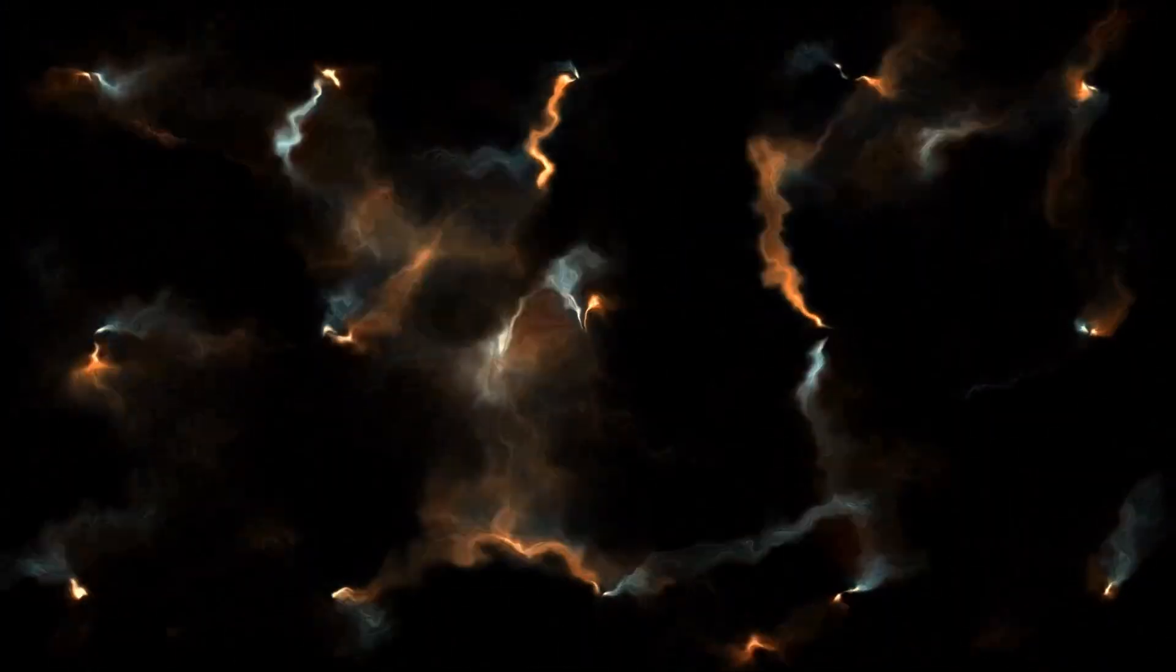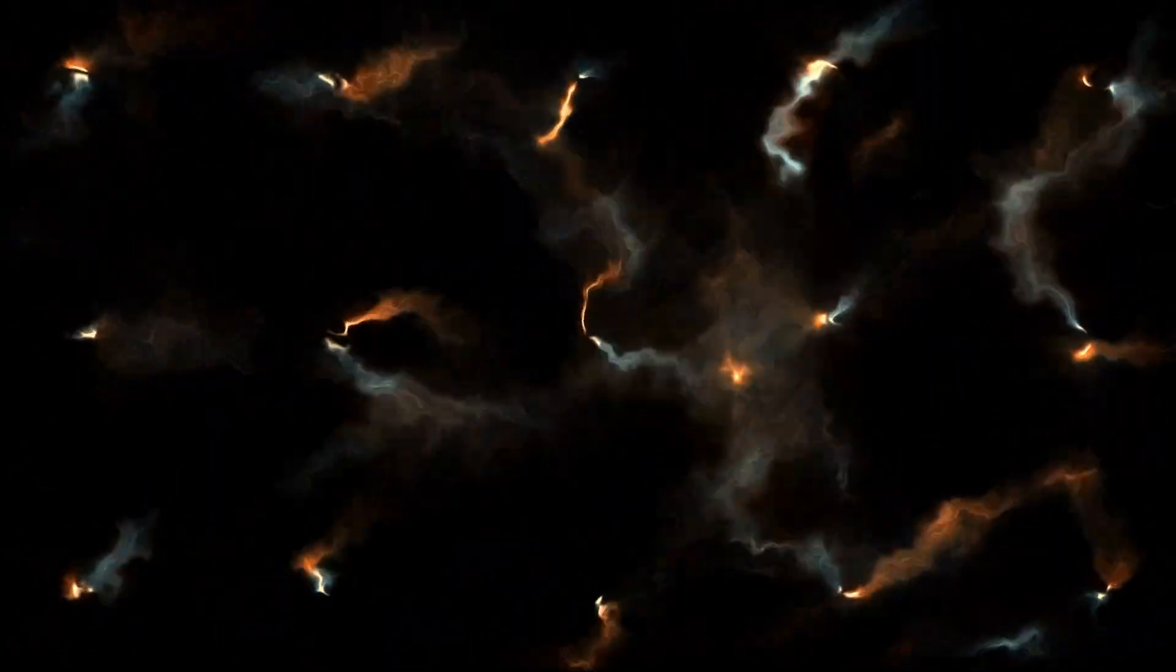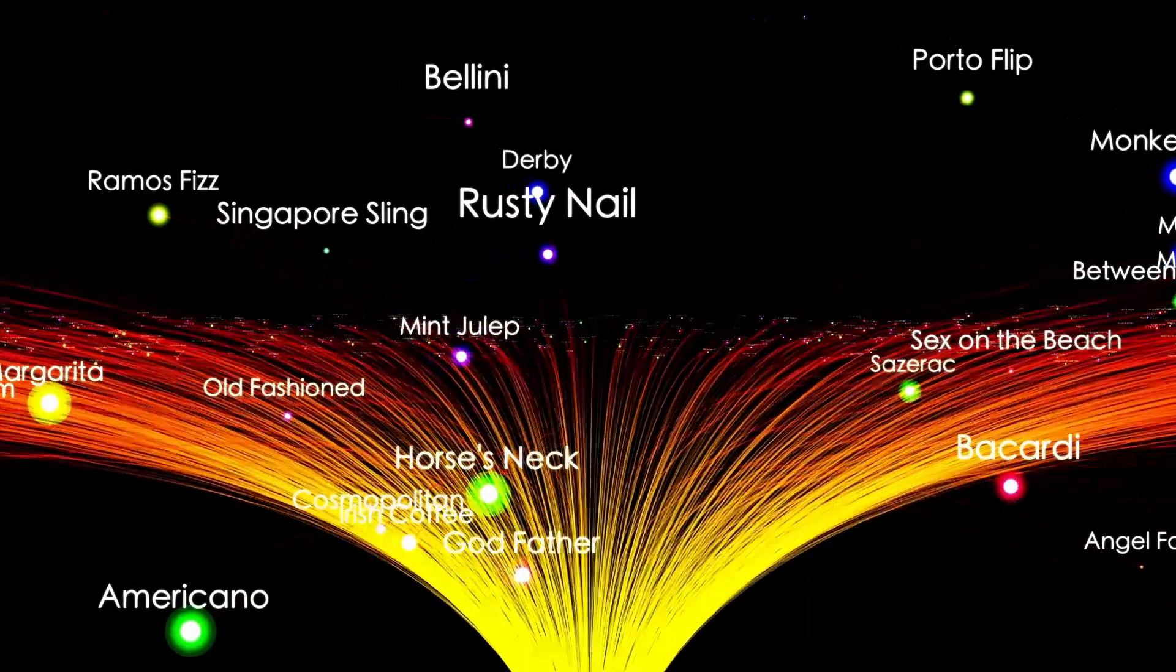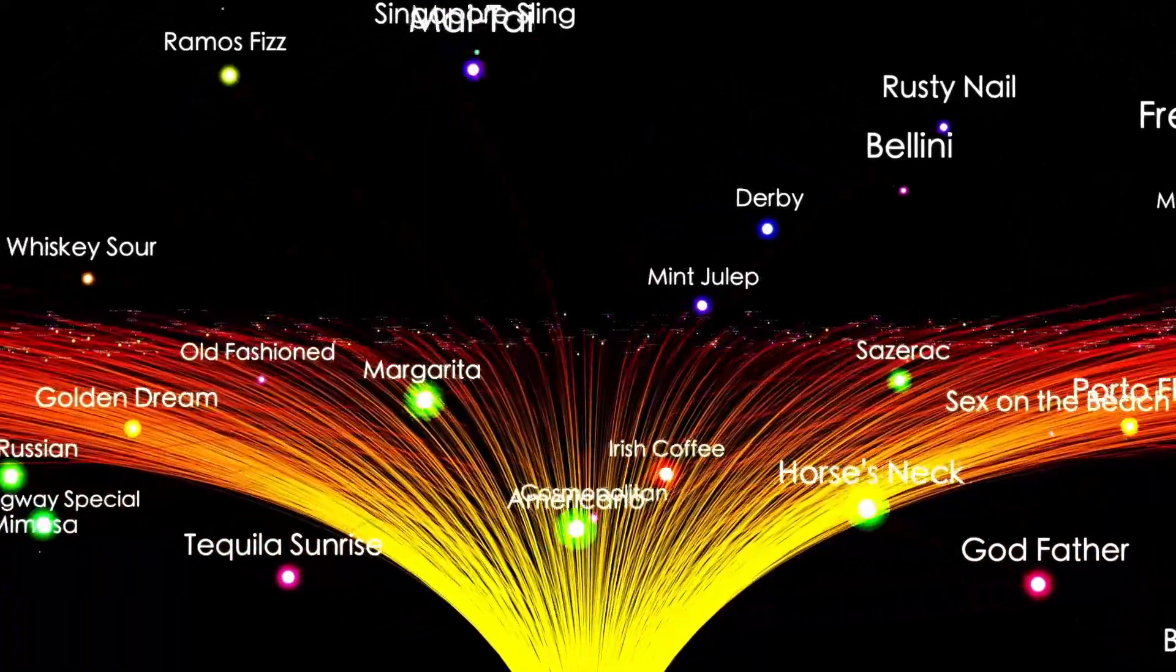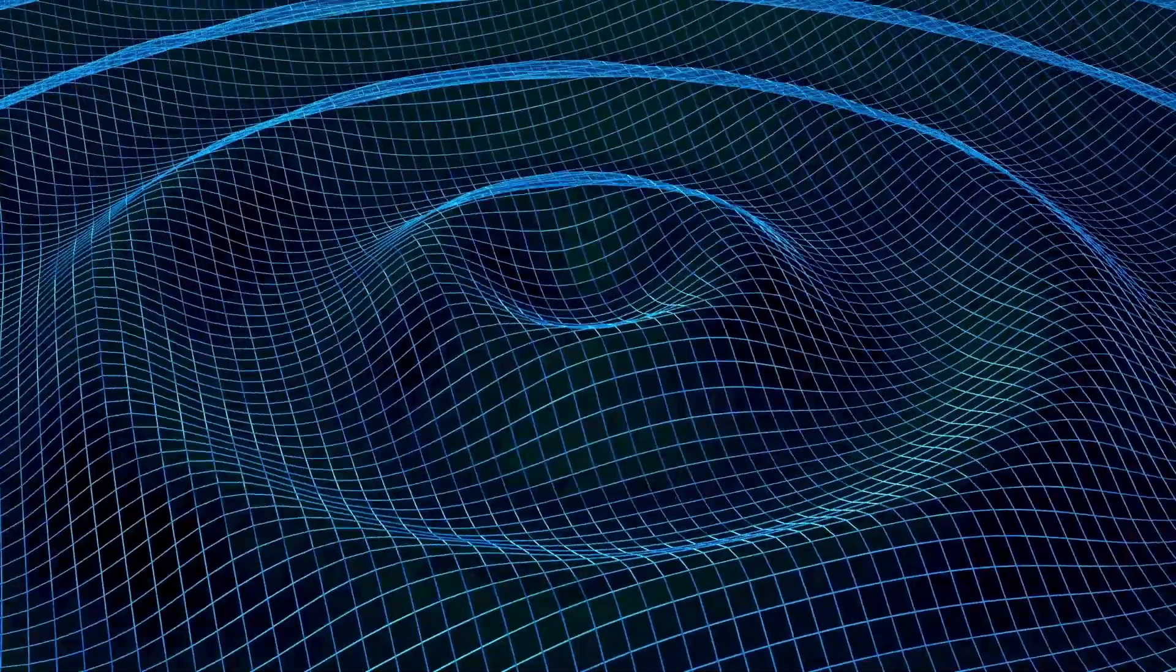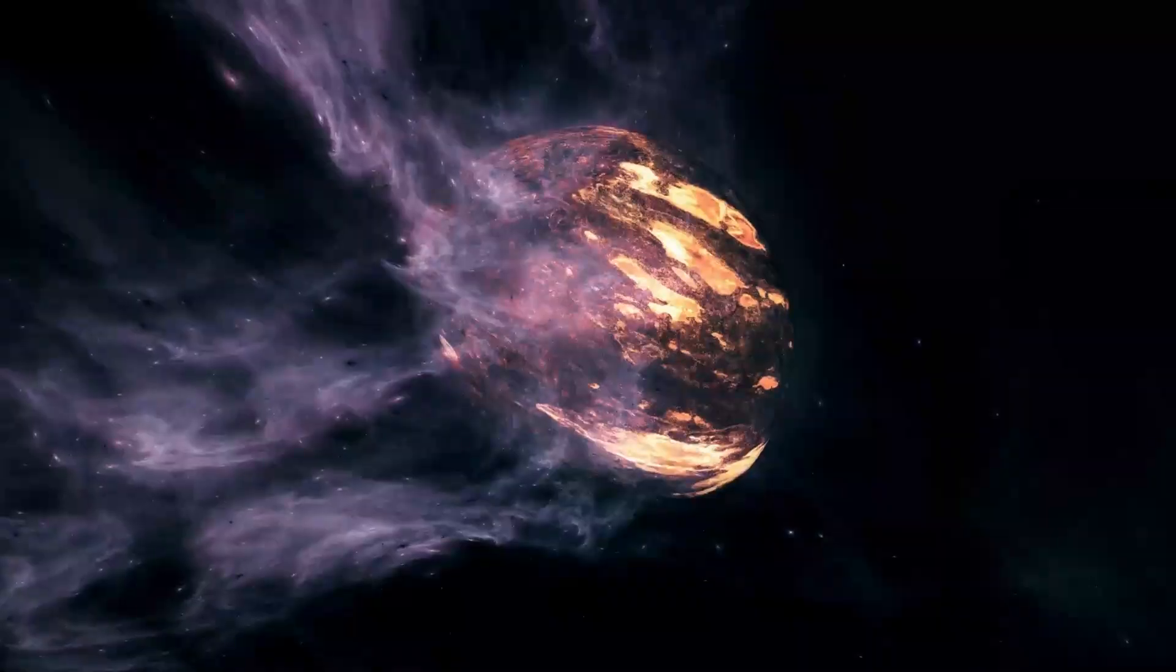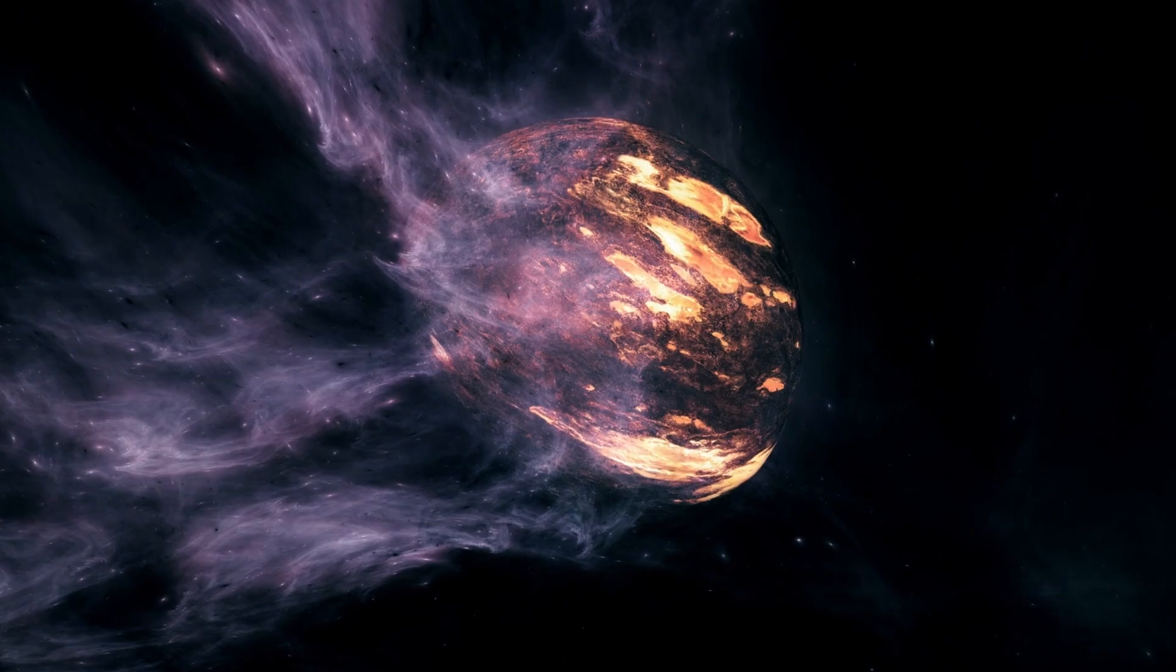Now imagine something as familiar as smoke from a match or the burning of a forest. Webb has detected something chemically similar, polycyclic aromatic hydrocarbons near the very edge of the observable universe. These complex organic molecules, typically found in car exhaust and burnt organic matter on Earth, were discovered drifting through space just 750 million years after the big bang.